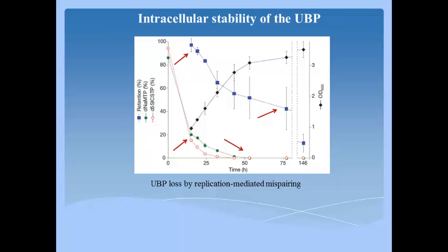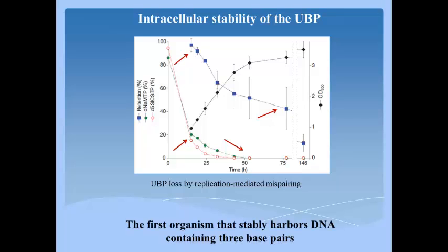Taken together, these data suggest that in the absence of unnatural triphosphate, the unnatural base pair is eventually lost by replication-mediated mispairing and not from the activity of DNA repair pathways. The authors were able to grow cells with unnatural base pairs for the first time, and it is a big breakthrough in the field.